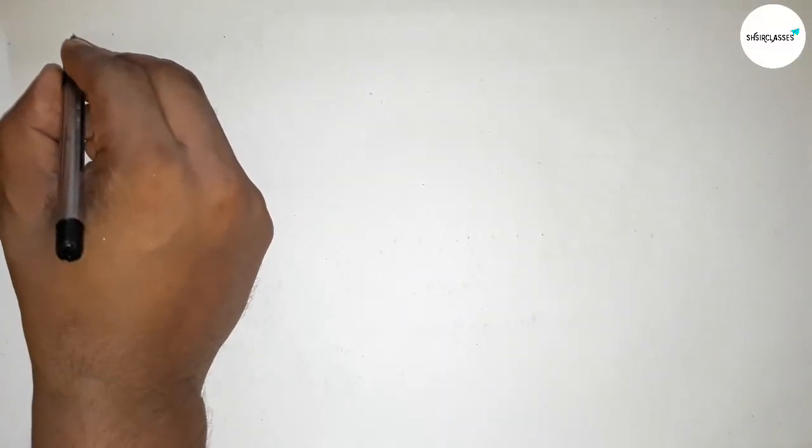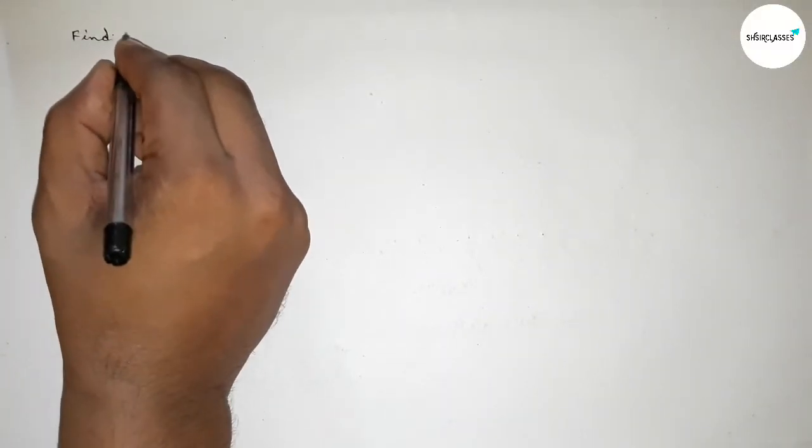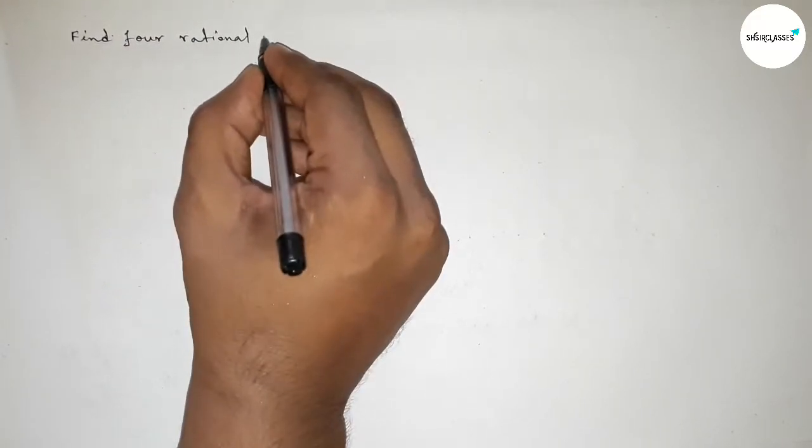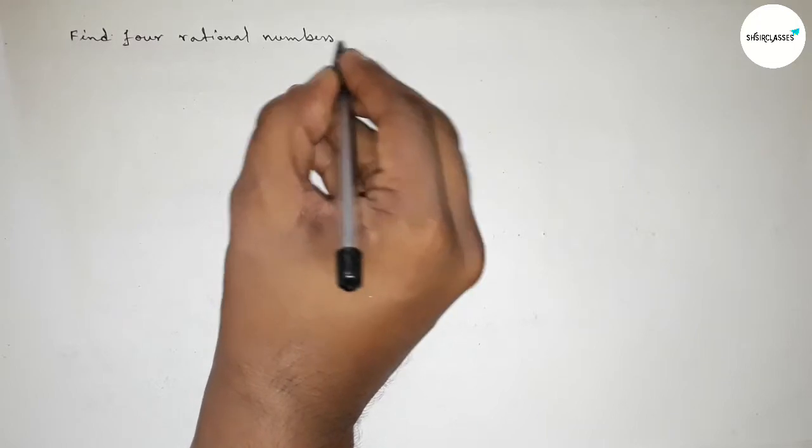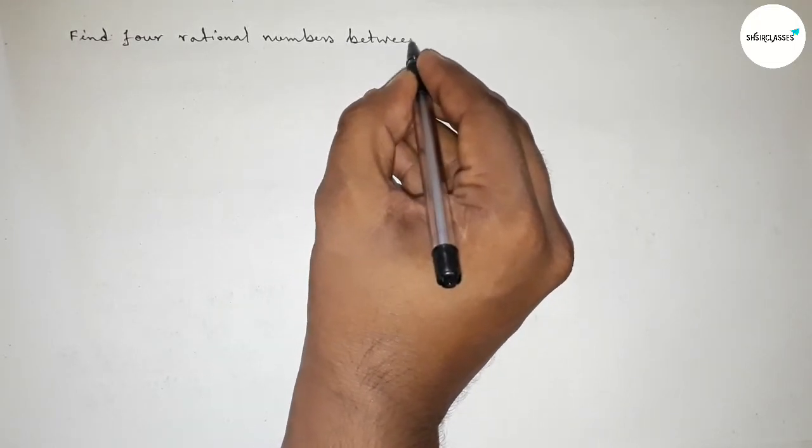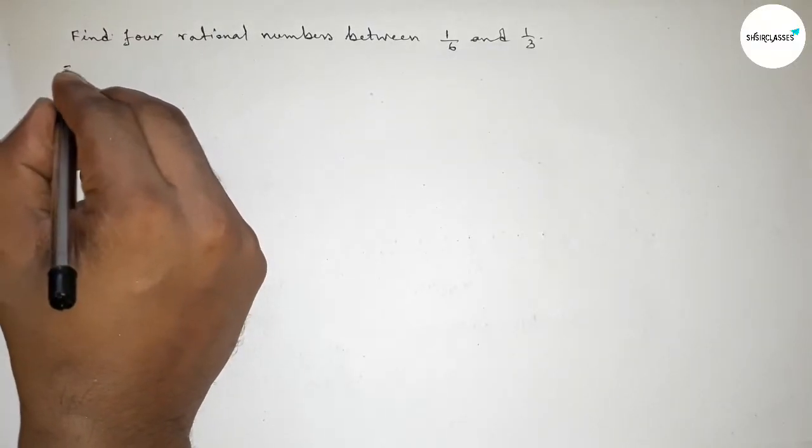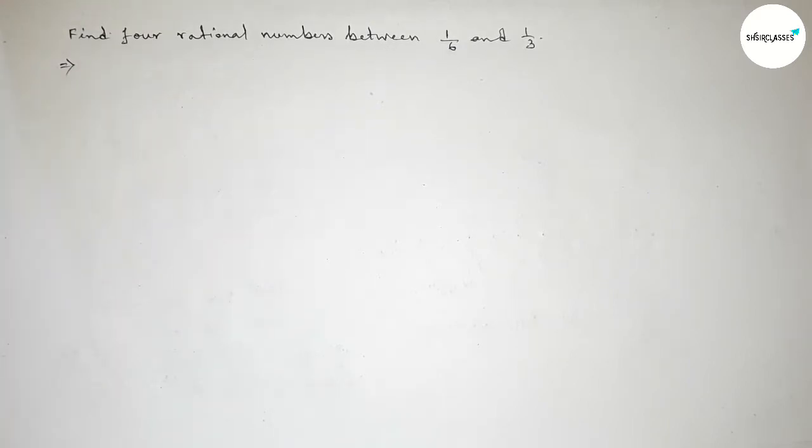Hi everyone, welcome to SI Share Classes. Today in this video, we have to find out four rational numbers between 1 over 6 and 1 over 3. So let's start the video. First of all, let's solve this problem.